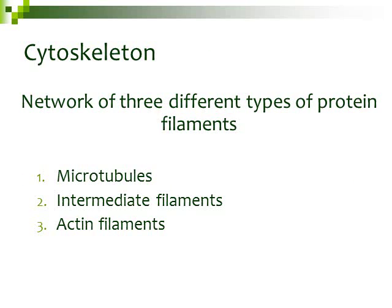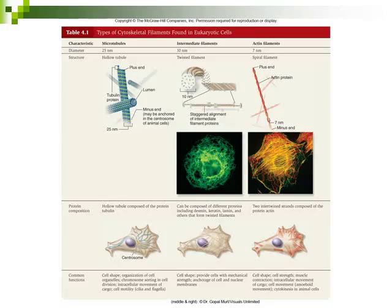Besides being the central coordinating system for metabolism, the cytosol also contains the cytoskeleton — kind of like a skeleton inside the cell, similar to the skeleton in our bodies. This cytoskeleton is made up of a network of three different types of protein filaments: microtubules, which are fairly standard size; intermediate filaments, which are intermediate in size; and actin filaments, which are tiny. Table 4.1 in your book looks at these different types of filaments found in the cytoskeleton.